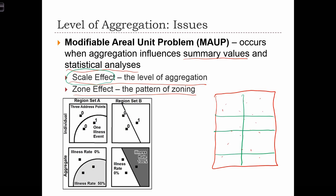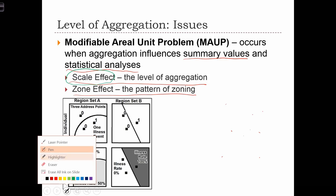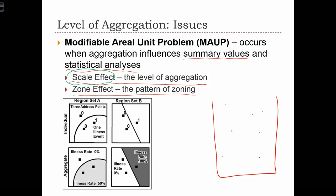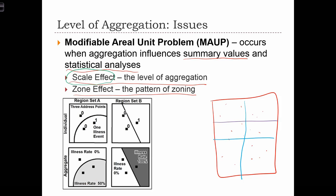The other type of effect is the zone effect. The zone effect has to do with the fact that while we can keep the scale of aggregation constant, for any given scale of aggregation the zones we draw at that level can change — they're arbitrary oftentimes. So if we redraw the zones, how many different ways can we split data up into roughly four zones? Well, we could do it like this, or we could split it up one, two, three, four in a different configuration.